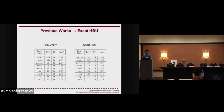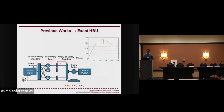Here you can see the comparison of Fully Unary and ExactHPU for some functions at 8-bit resolution. For example, for the exponential function, Fully Unary uses 17 LUTs, but ExactHPU uses 28 LUTs. Our method is based on ExactHPU, but it performs some approximation to eliminate the need for the binary adder. We don't need to use any biases, so we can reduce the critical path delay and reduce the area complexity.